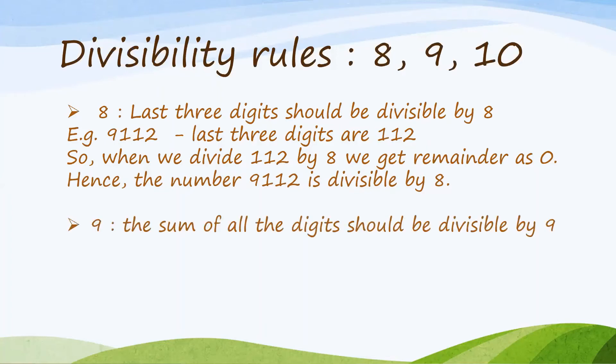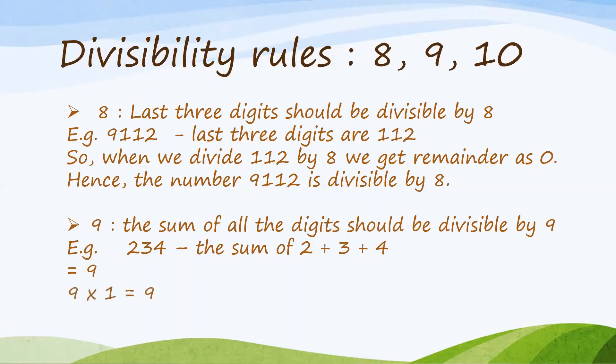The Divisibility Rule of 9 says that the sum of all the digits should be divisible by 9. For example, the number 234 — the sum of 2 plus 3 plus 4 is 9. So, the number 234 is divisible by 9.